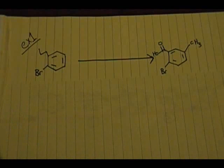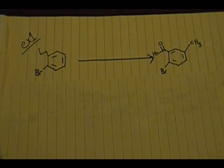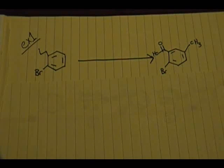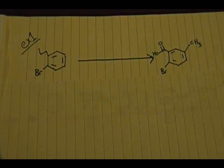Welcome back everybody. For this video we'll be discussing two examples of synthesis problems. These problems incorporate everything we have learned to date: electrophilic aromatic substitution reactions and the reactions of substituents on aromatic rings. This will really give you an understanding of where you stand and where you lack certain knowledge.